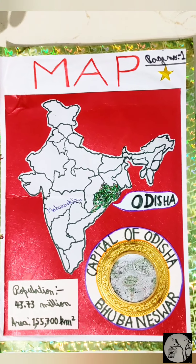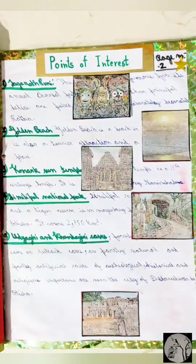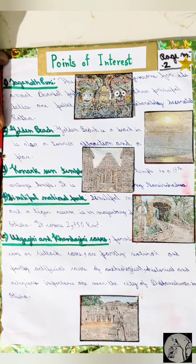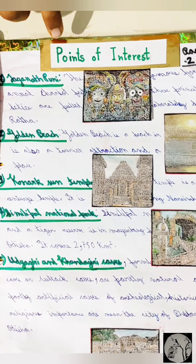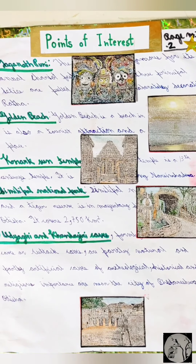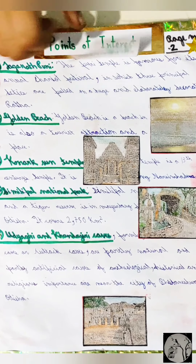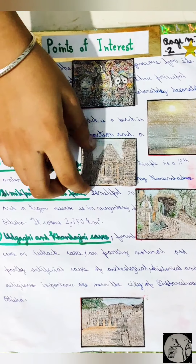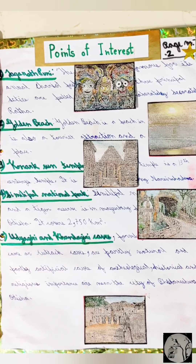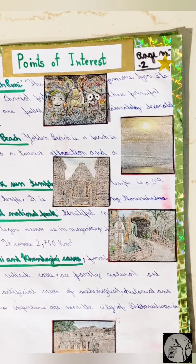My next page is points of interest. There are some famous tourism places of Odisha, like Jagannath Puri, Konark Sun Temple, etc.